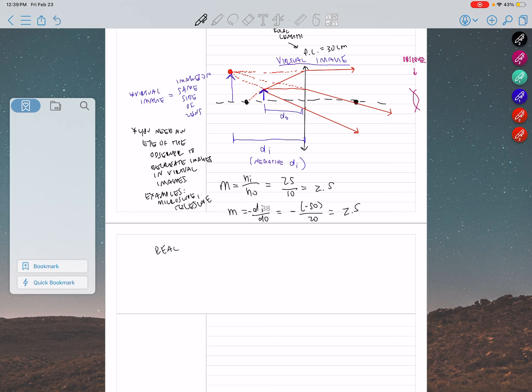This is assuming that you're working with converging lenses. If you're working with a diverging lens, it doesn't matter where you put the object, you're always going to have virtual images. So, diverging lenses always produce virtual images.